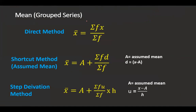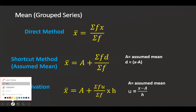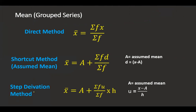For a grouped series, we just need three methods, as usual. We will be having a direct method, a shortcut method — which is also called the assumed mean method — and a step deviation method. All three, we are going to see in this video.